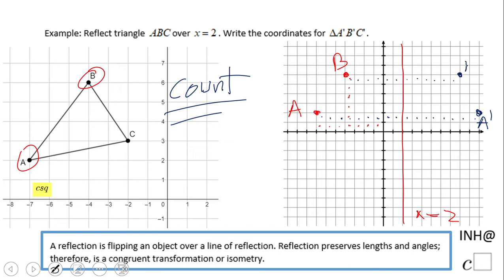Do one more time for the last point, point C, which is negative 2 and 3, which is right here. This is point C. So you can see the triangle ABC we started from and how we're going to